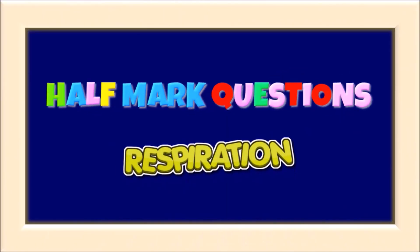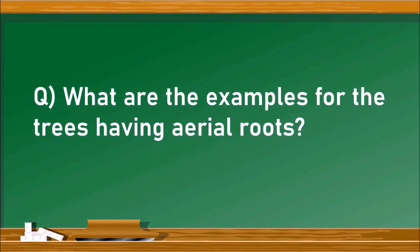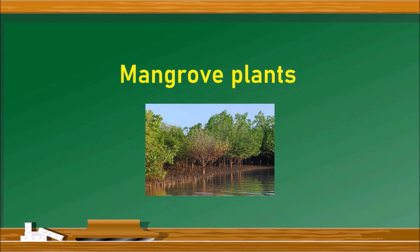A few more questions from the chapter on respiration. The first question: what are examples of trees having aerial roots? The best examples are mangrove plants, which grow in marshy lands with waterlogged soils. The aerial roots enable these plants to respire through the roots.